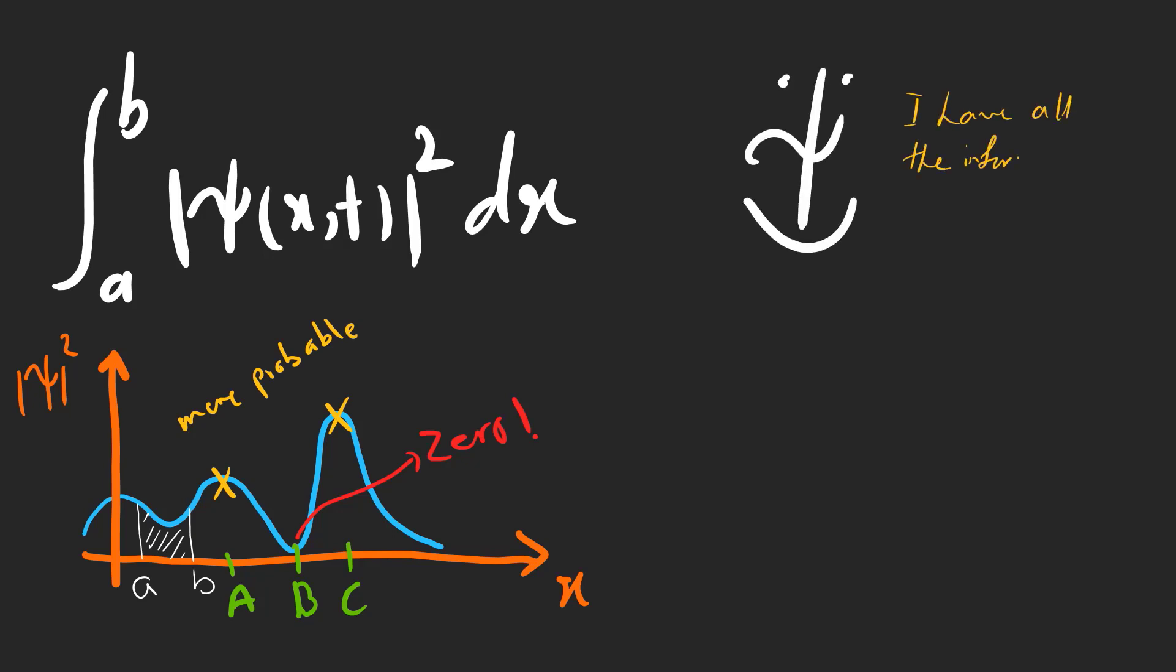This is how we interpret the wave function, and we know it as a function that contains any information we need to talk about the particle. There is something bizarre about the wave function, and it's when we want to measure some characteristics of the particle.